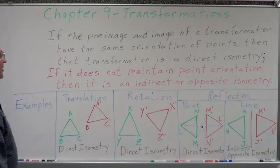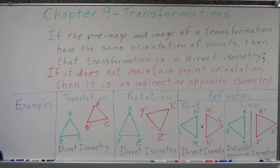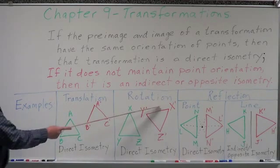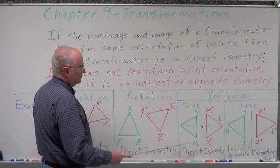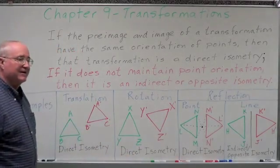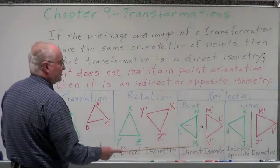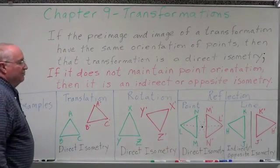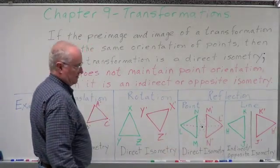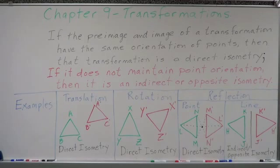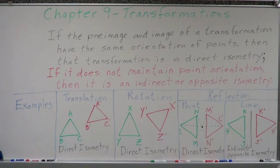Translations are direct isometries all the time. Rotations are direct isometries all the time. A reflection across a point — which is really a rotation of 180 degrees — will maintain point orientation. A reflection across a line will not. These are the concepts of direct isometries and indirect isometries, and you need to get them into your vocabulary.